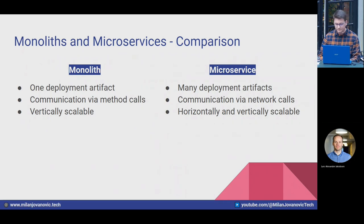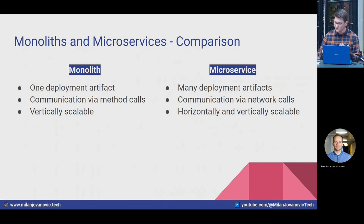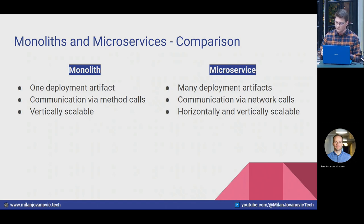When it comes to scalability, a monolith is typically vertically scalable — you throw more resources at the machine hosting it. You can horizontally scale a monolith, but the downside is reduced efficiency: you scale the entire application when maybe only 20% is under high load. With microservices, that 20% can be its own service, scaled independently from the rest for maximum resource utilization.